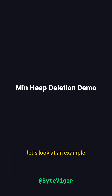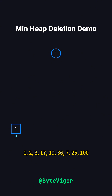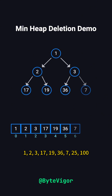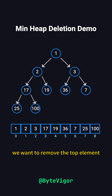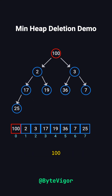Let's look at an example. Imagine we have a min-heap represented as 1, 2, 3, 17, 19, 36, 7, 25, 100. We want to remove the top element, 1. First, we replace 1 with the last element, 100.